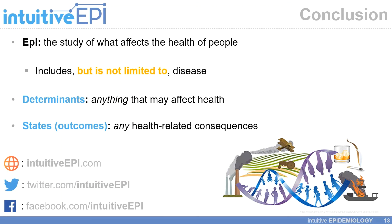And with that, I will conclude by saying epidemiology is the study of what affects the health of people, and I think it is clear that this includes, but is not limited to, disease. Therefore, in terms of the definition of epidemiology, we're focused on determinants — which could be anything that goes on to affect one's health — and we're also interested in states or outcomes, so any health-related consequences of given correlates, risk factors, or exposures.